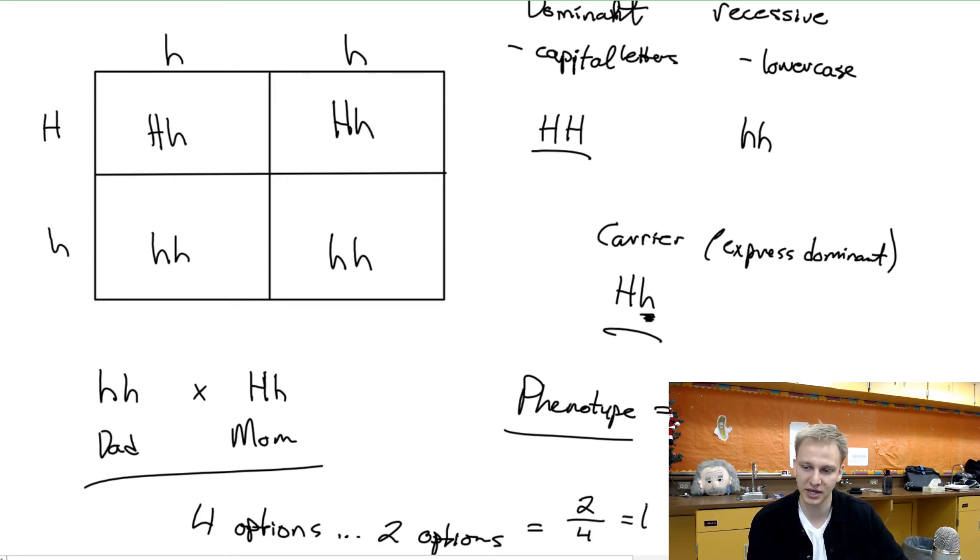And what we can say then is that two out of the four options will be lowercase h lowercase h, or will be widow's peak. So what that means is that 50 percent, there's a 50% chance that me as a baby or me as an adult will get a widow's peak.